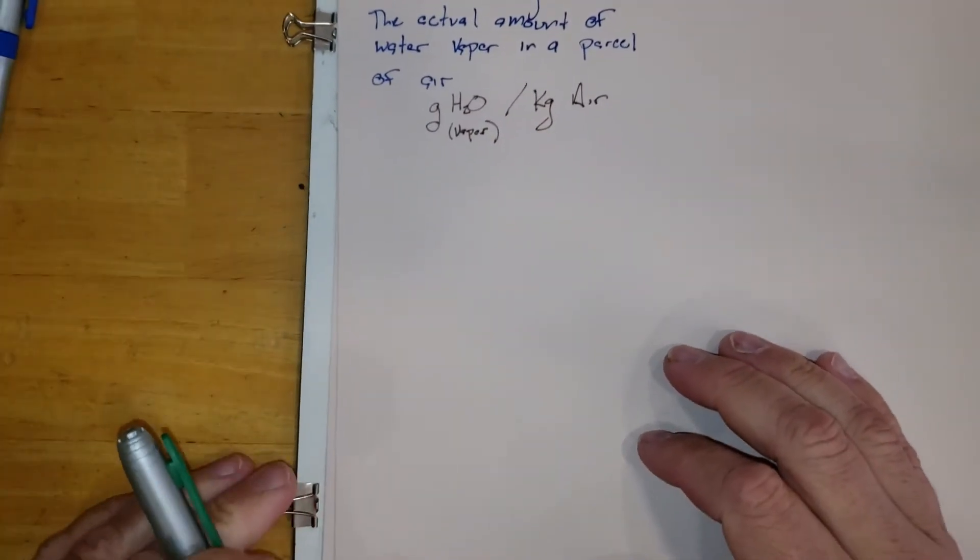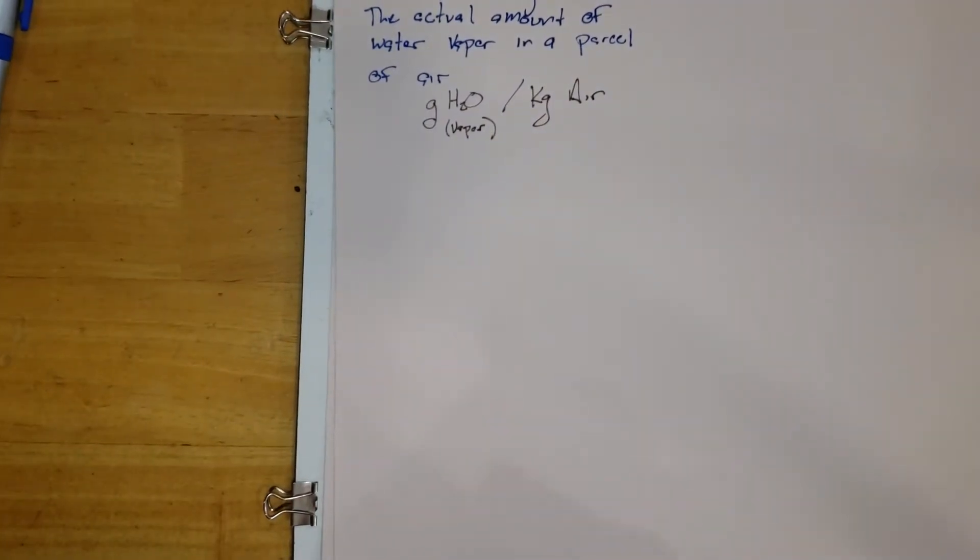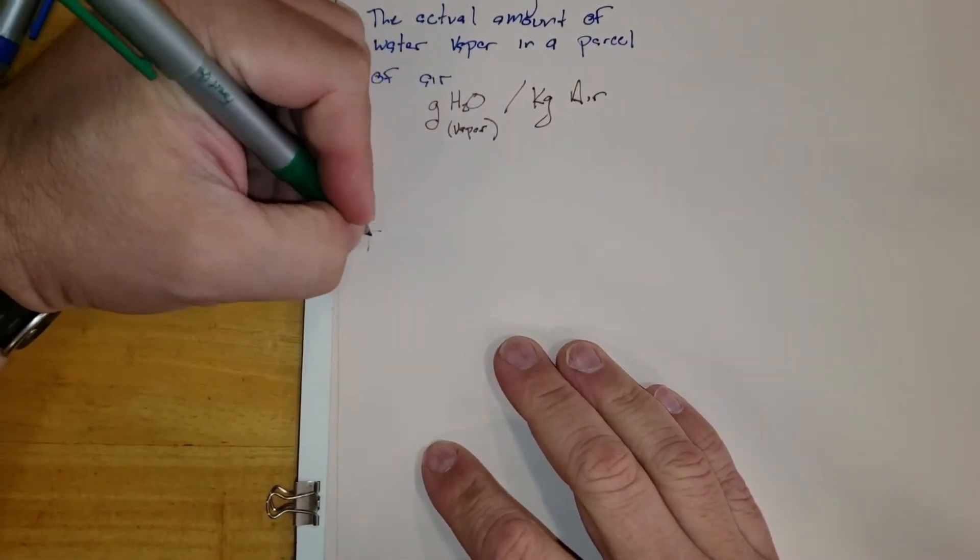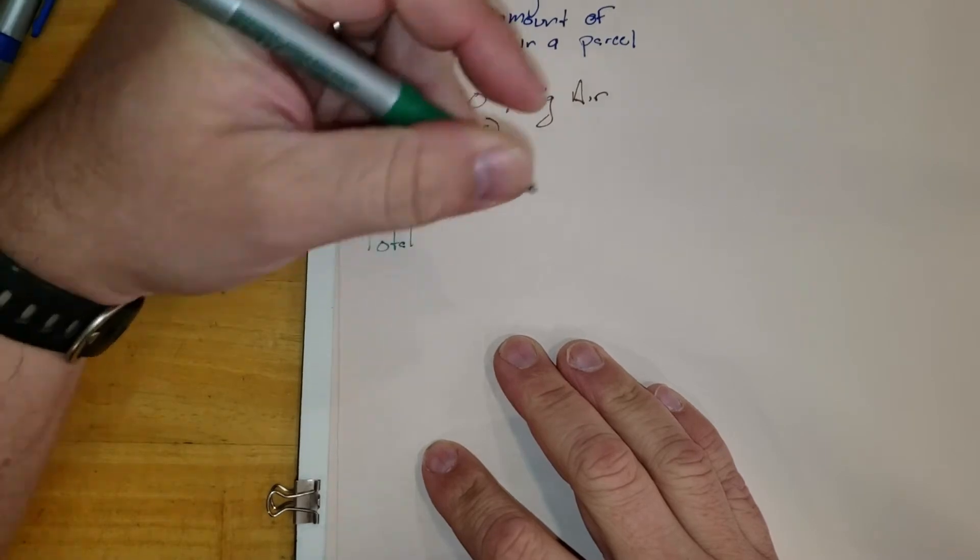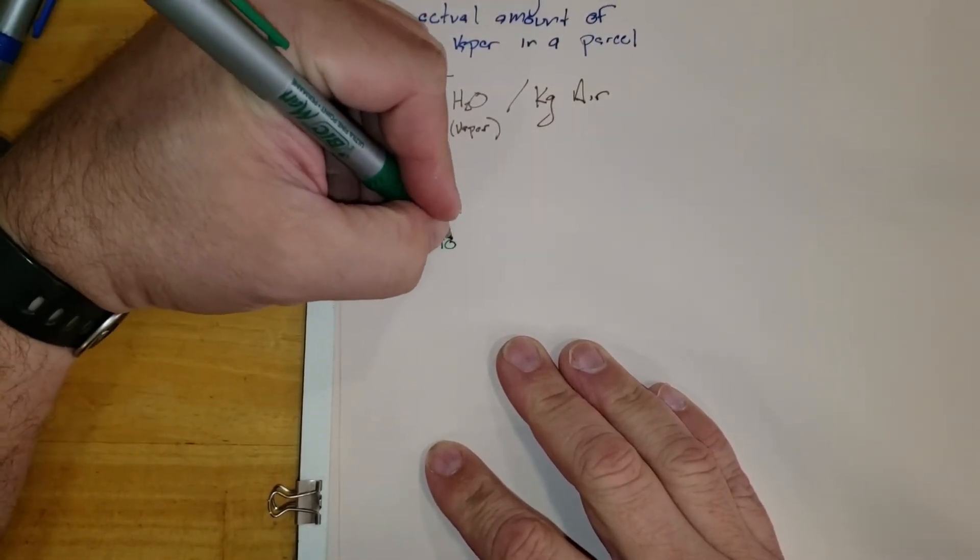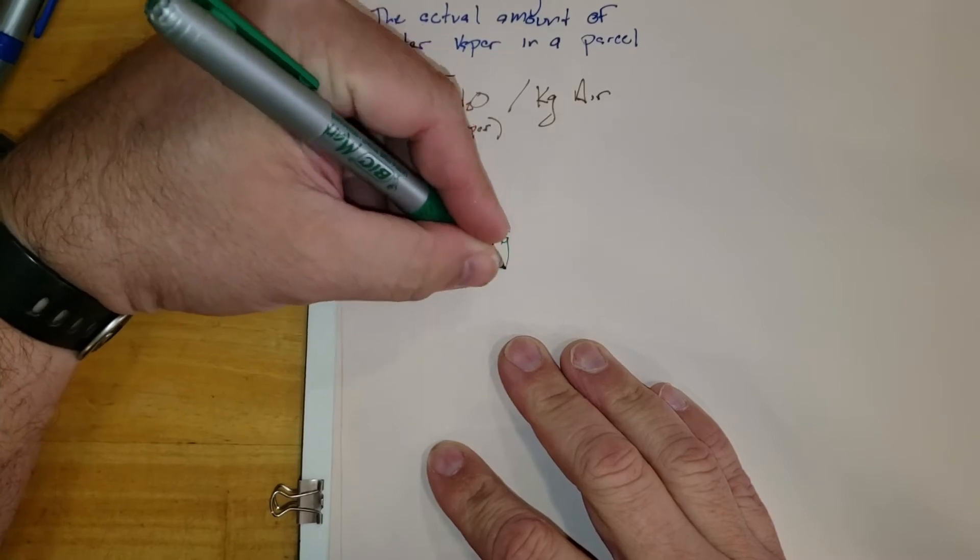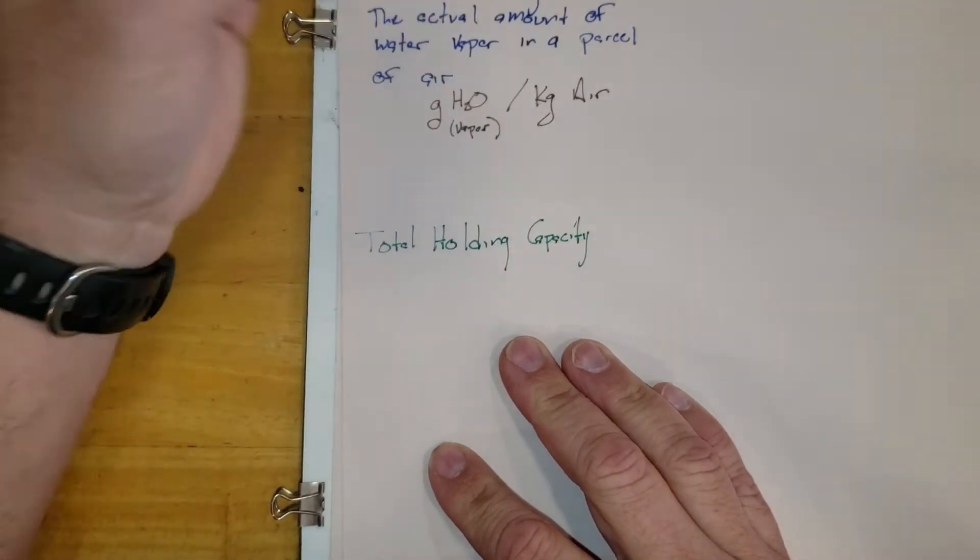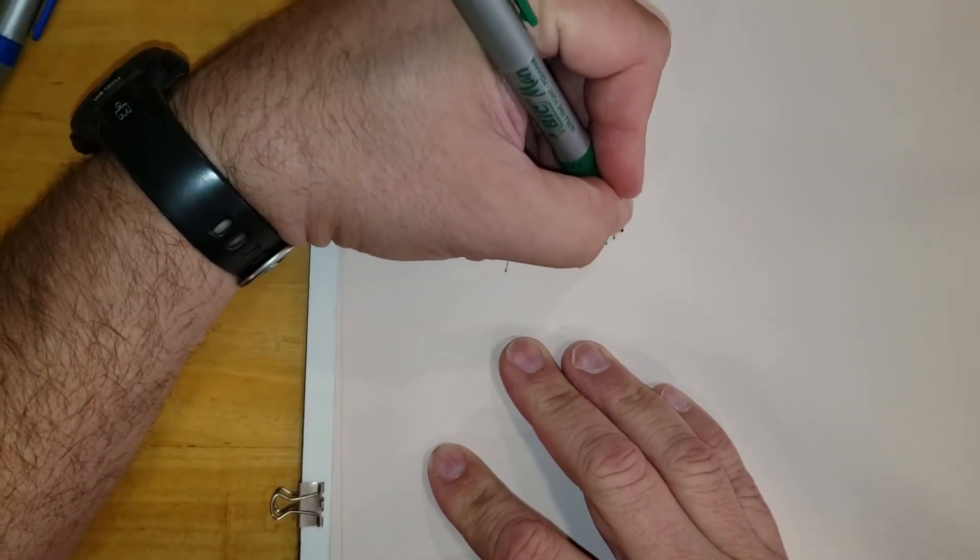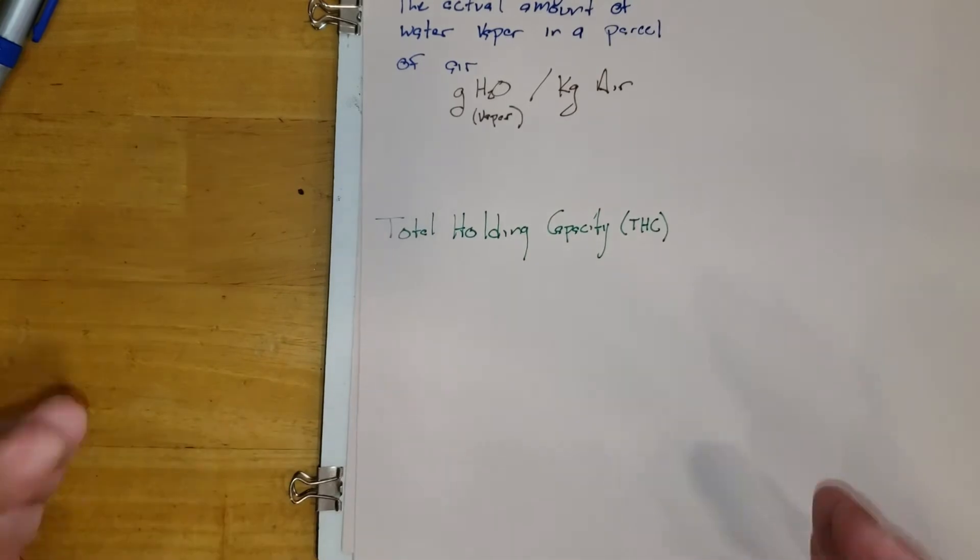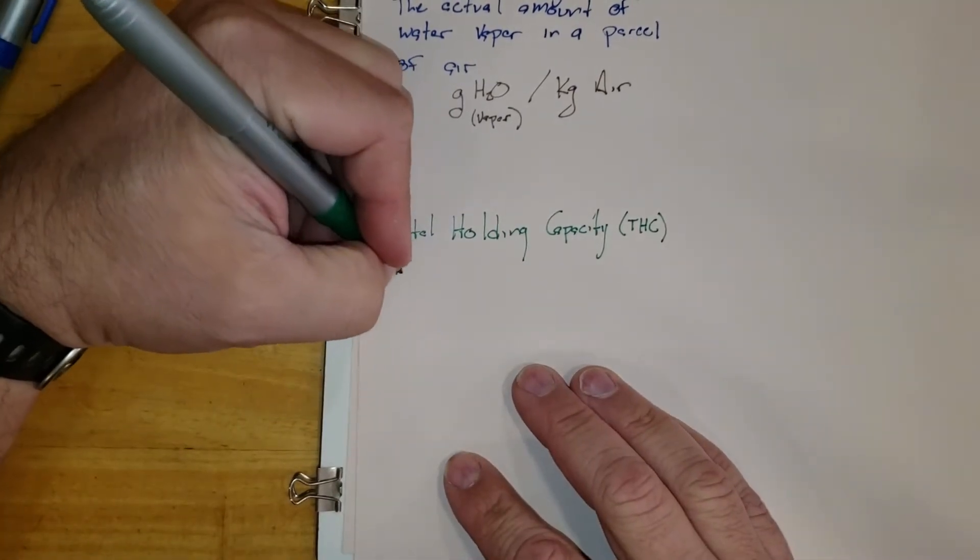And the next thing we want to think about is how much water vapor can that parcel hold? And we refer to that as the total holding capacity, and I abbreviate that with THC, the total holding capacity. Now the total holding capacity is the amount of water vapor, and I'm going to go back to my parcel again, an air parcel can hold.